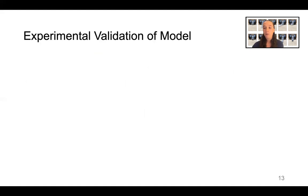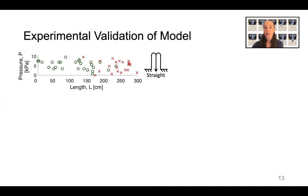To validate our model, we experimentally retracted robots of various curvatures, pressures, and lengths, and observed whether they inverted or buckled. To start, we retracted a straight robot at a range of pressures and lengths. Red X's denote that the robot buckled, and green circles denote that the robot inverted. The black dotted line shows our modeled transition length between inversion and buckling.